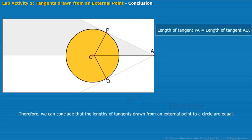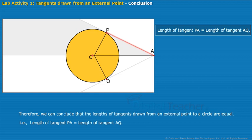Therefore, we can conclude that the lengths of tangents drawn from an external point to a circle are equal. That is, length of tangent PA is equal to length of tangent AQ.